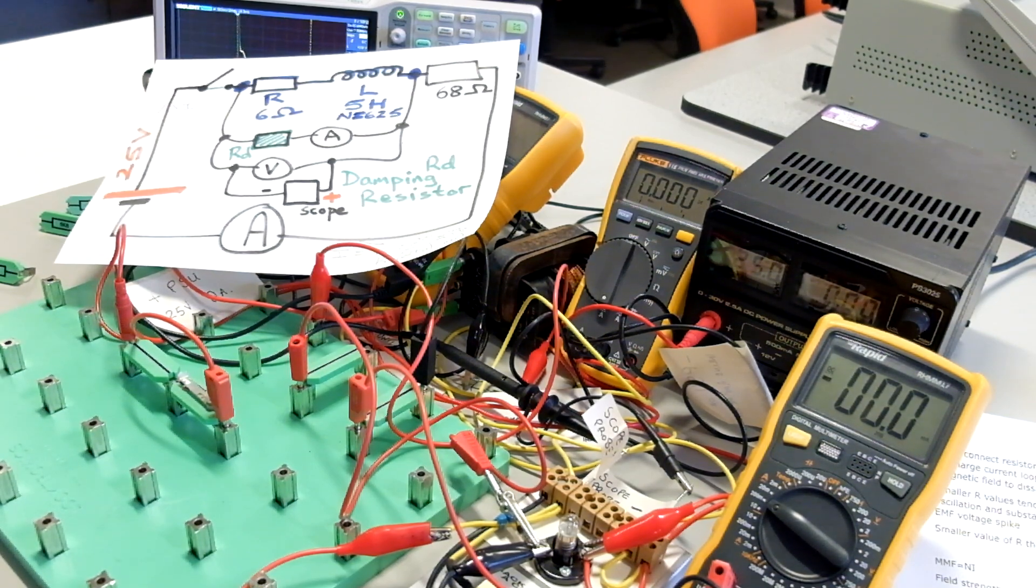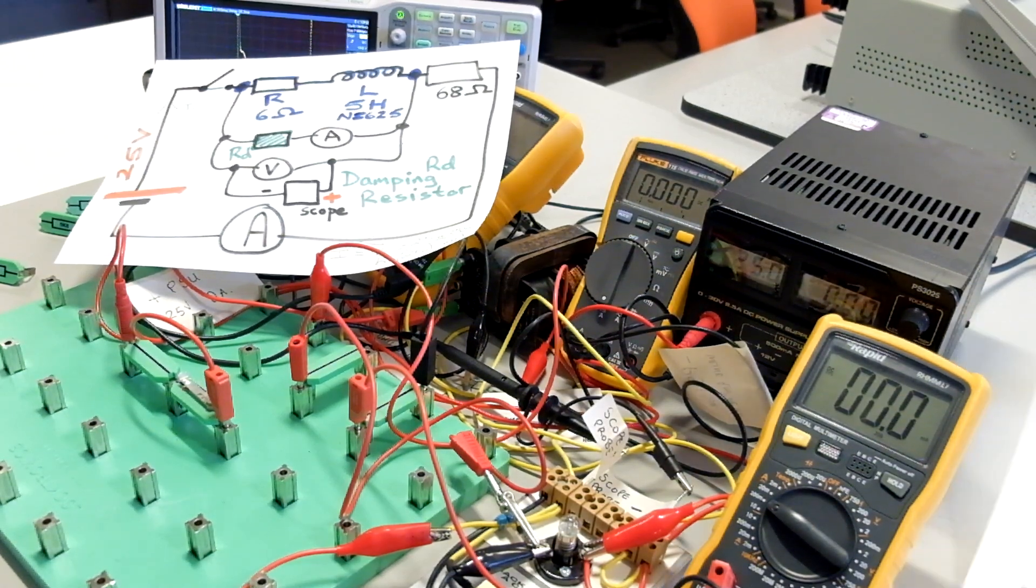The smaller and smaller values of R will tend to maintain more and more critical damping, removing oscillations, substantially reducing the magnitude of the back EMF which mitigates any potential damage to components from large voltages and sparking across any air gap.